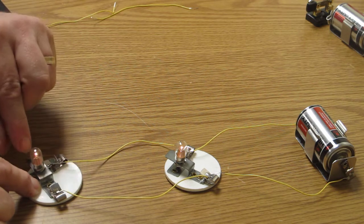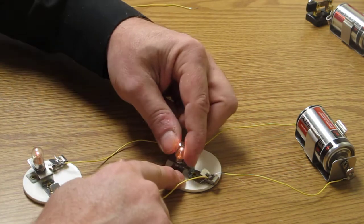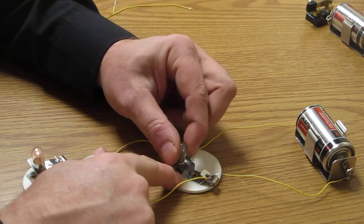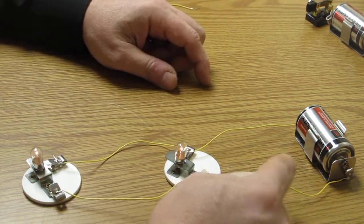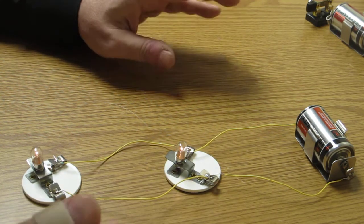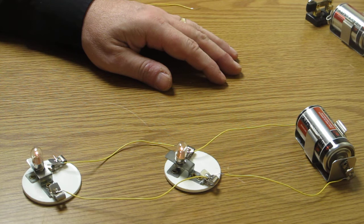When I tighten that one again and I loosen this, this one stays lit. That is showing that the electricity has more than one path, and that is how a parallel circuit is defined.